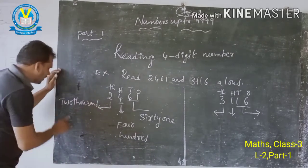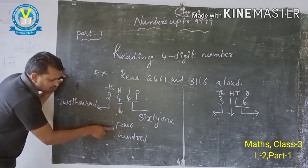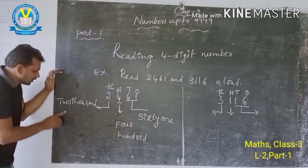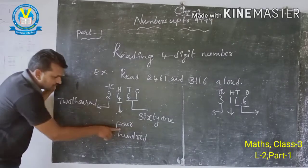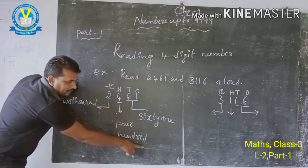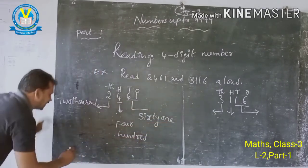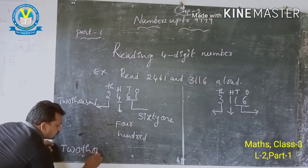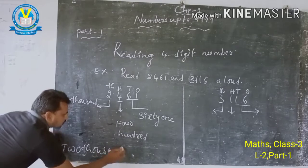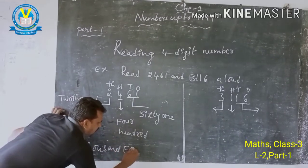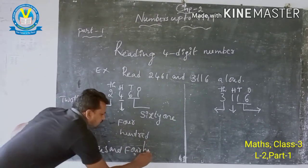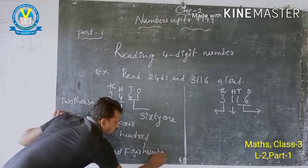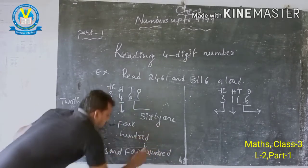Now read the number: 2,000 plus 400 plus 61 equals 2,461.